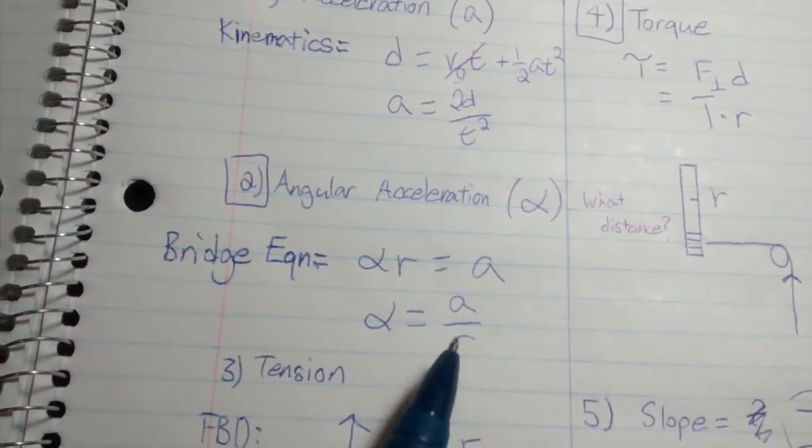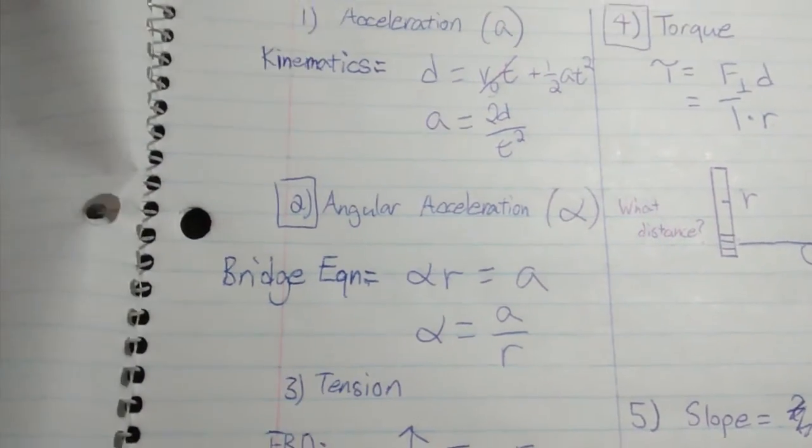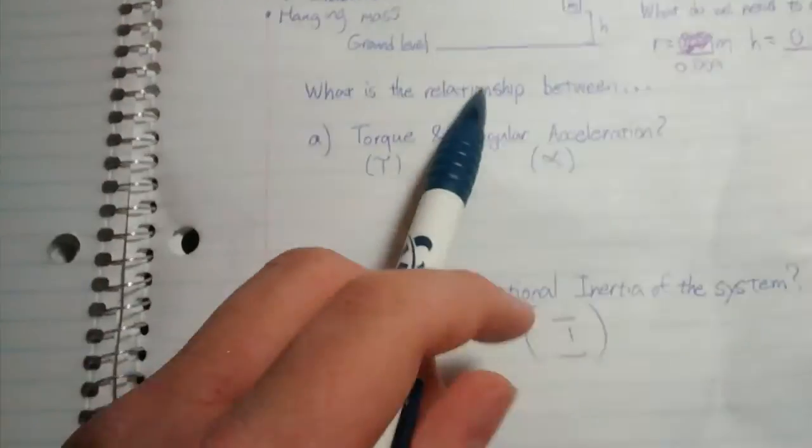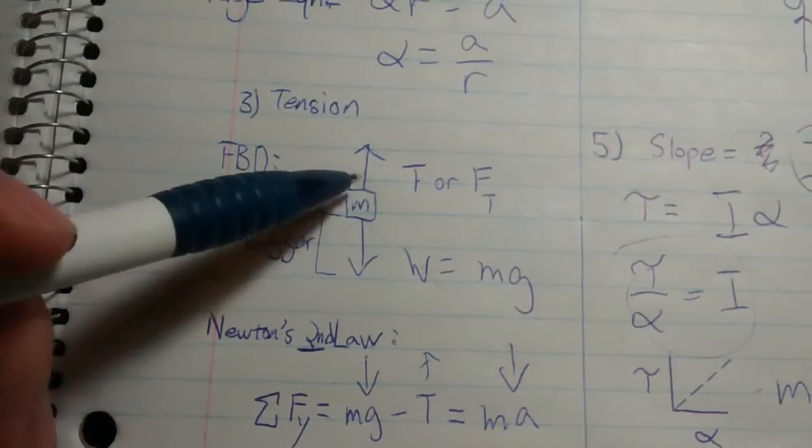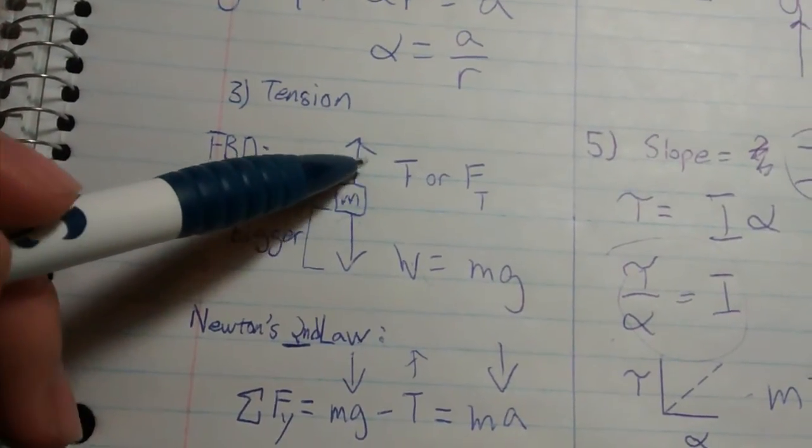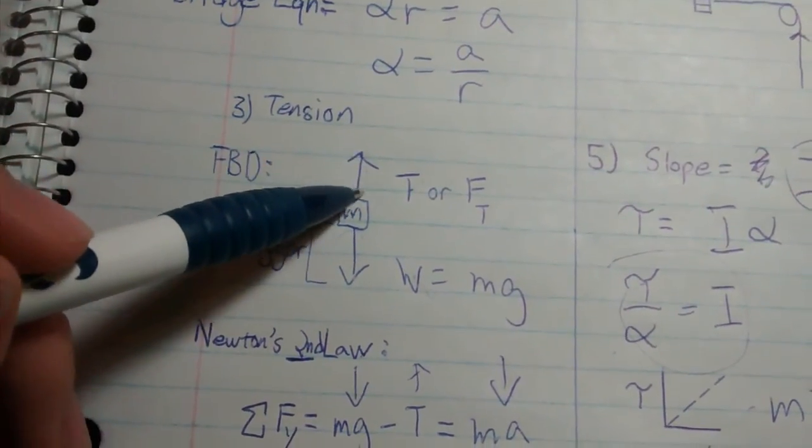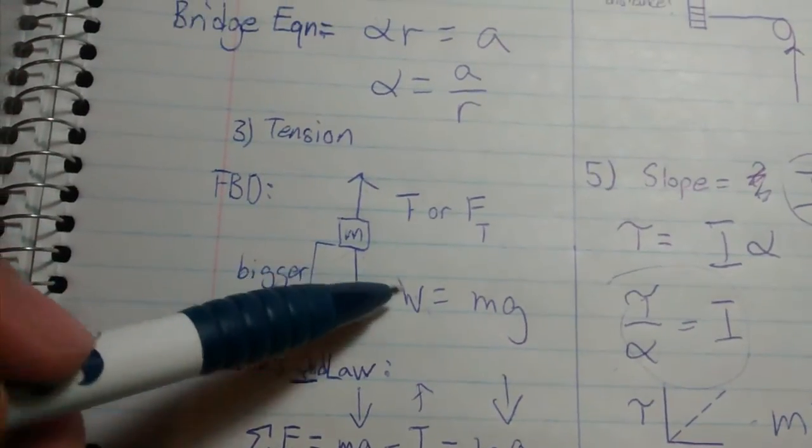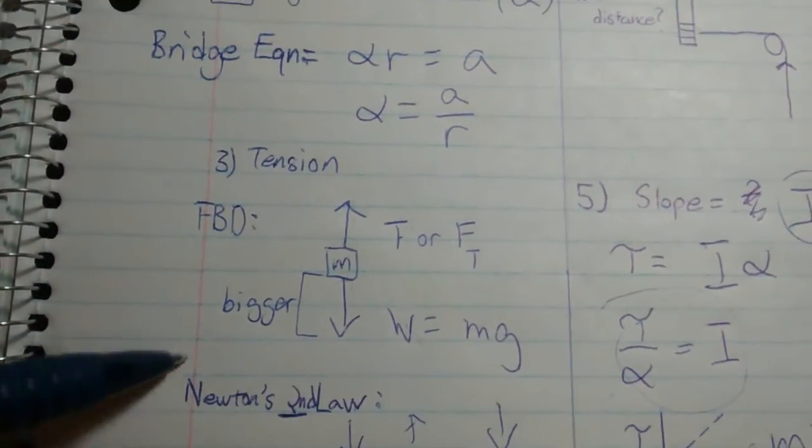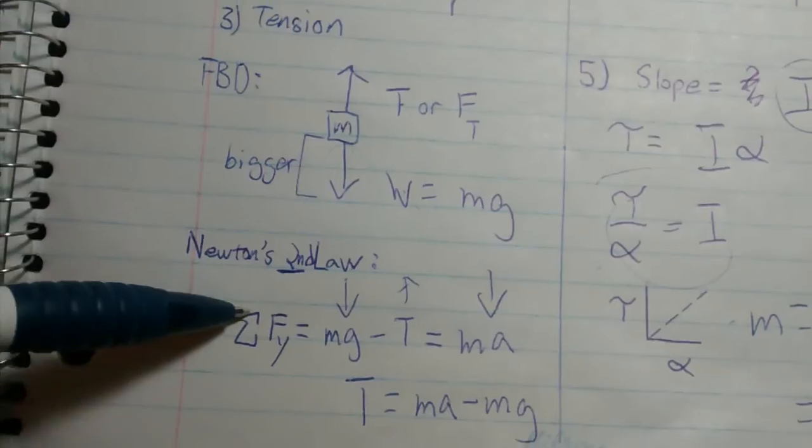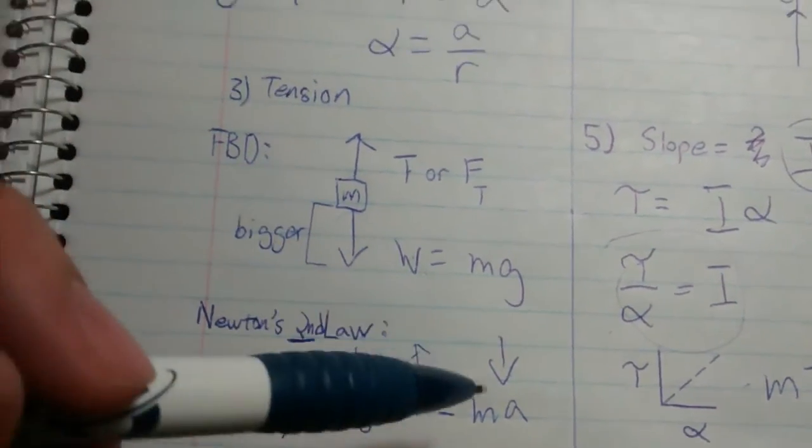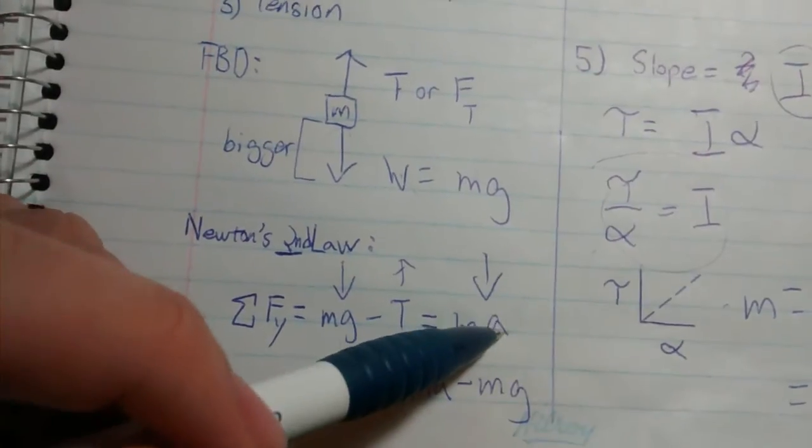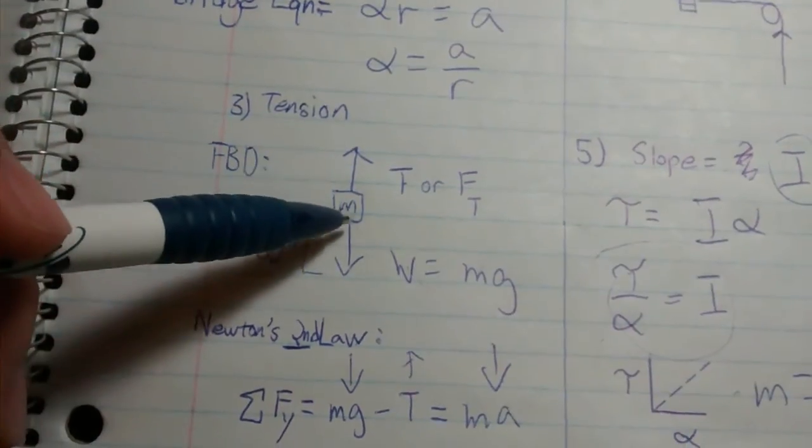Number three: tension. In a free body diagram with the hanging mass, you have tension force upward and force due to weight downward. In Newton's second law, the sum of forces in the y direction equals mass times acceleration. Since the mass is falling downward, ma is in the negative direction.